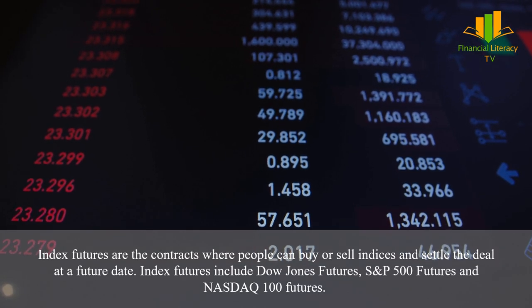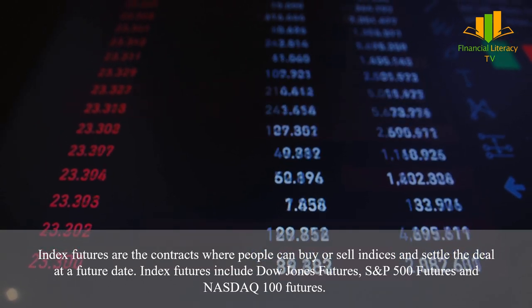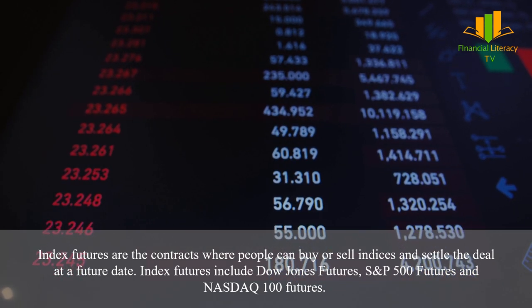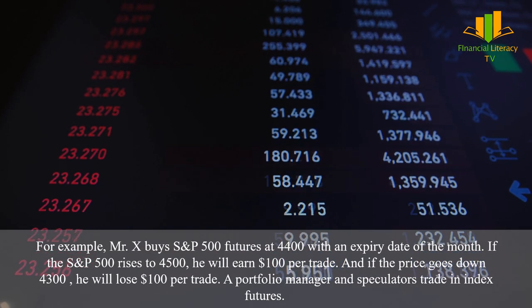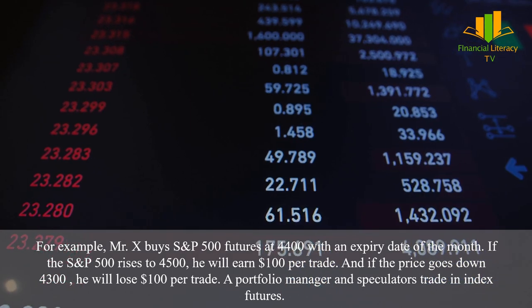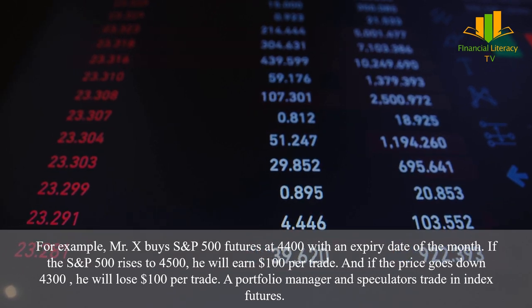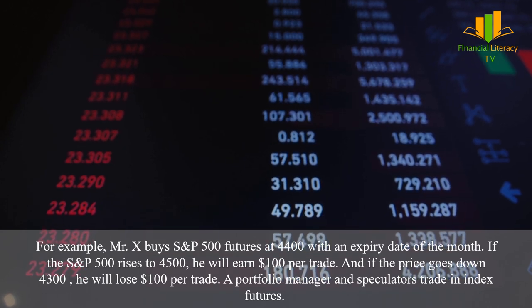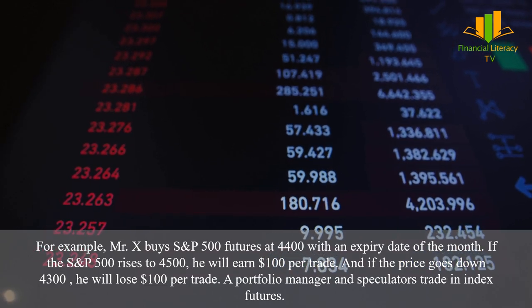Index futures are contracts where people can buy or sell indices and settle the deal at a future date. Index futures include Dow Jones futures, S&P 500 futures, and NASDAQ 100 futures. For example, Mr. X buys S&P 500 futures at 4,400 with an expiry date at month end. If the S&P 500 rises to 4,500, he will earn $100 per trade; if the price goes down to 4,300, he will lose $100 per trade. Portfolio managers and speculators trade in index futures.